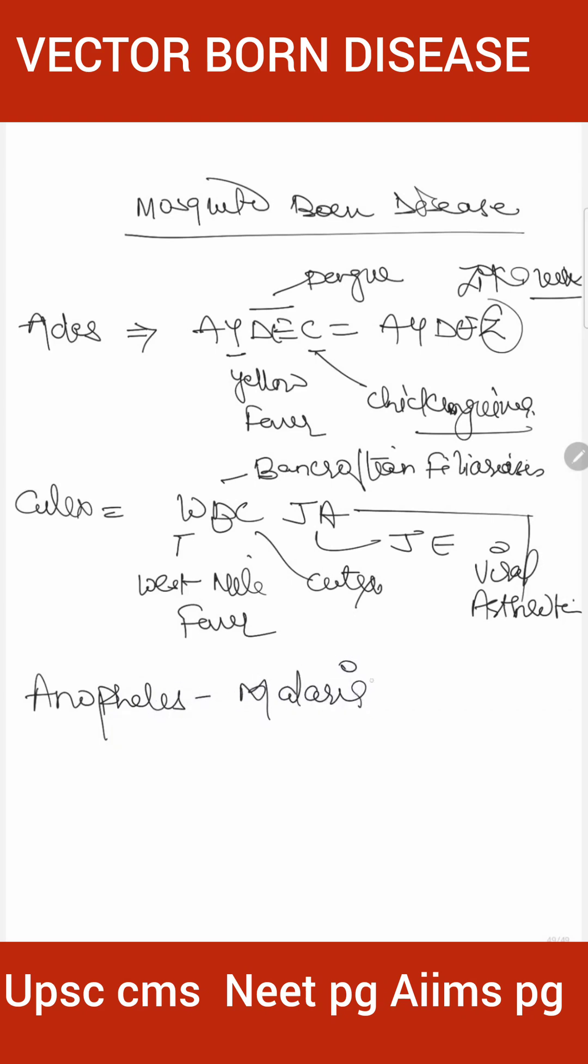Now Mansonia - Mansonia is very easy. Brugian filariasis is transmitted by Mansonia filariasis, but Bancroftian is transmitted by answer is Culex.